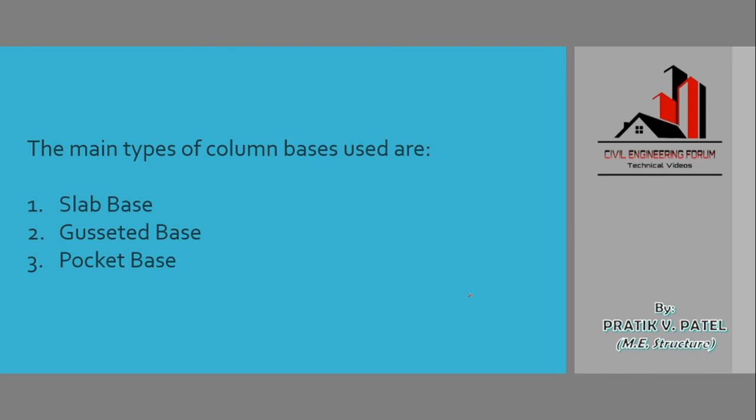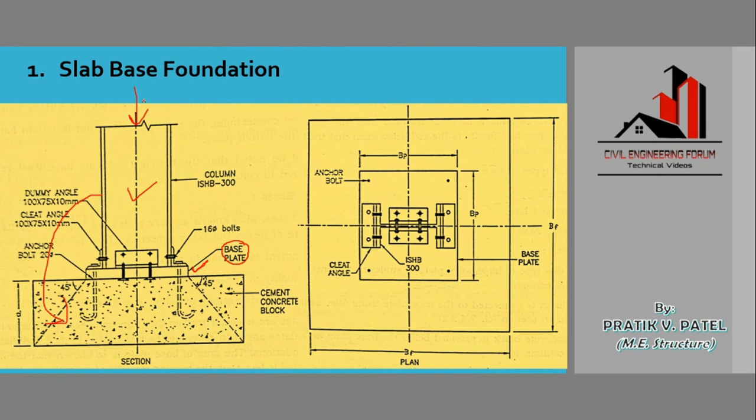Getting back to the figure, the intensity of loading coming on the column or compression member should be less than that of the bearing capacity of this concrete block below the base plate. The base plate is supported on this concrete block, so the loading should be less than the bearing capacity of the concrete.